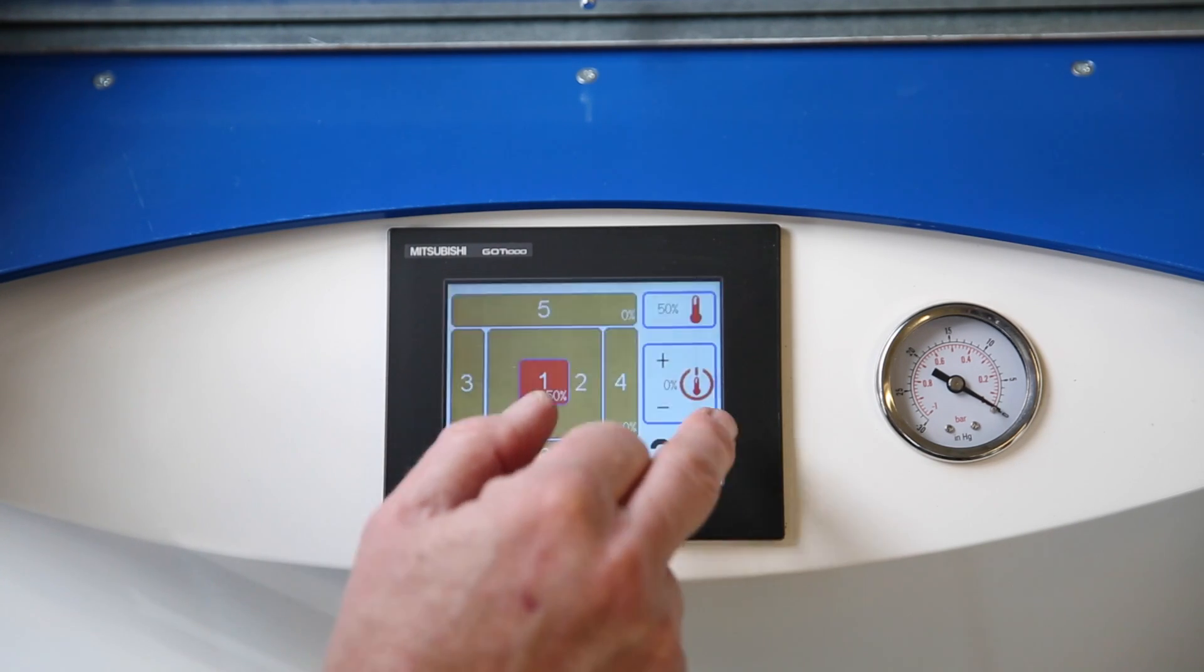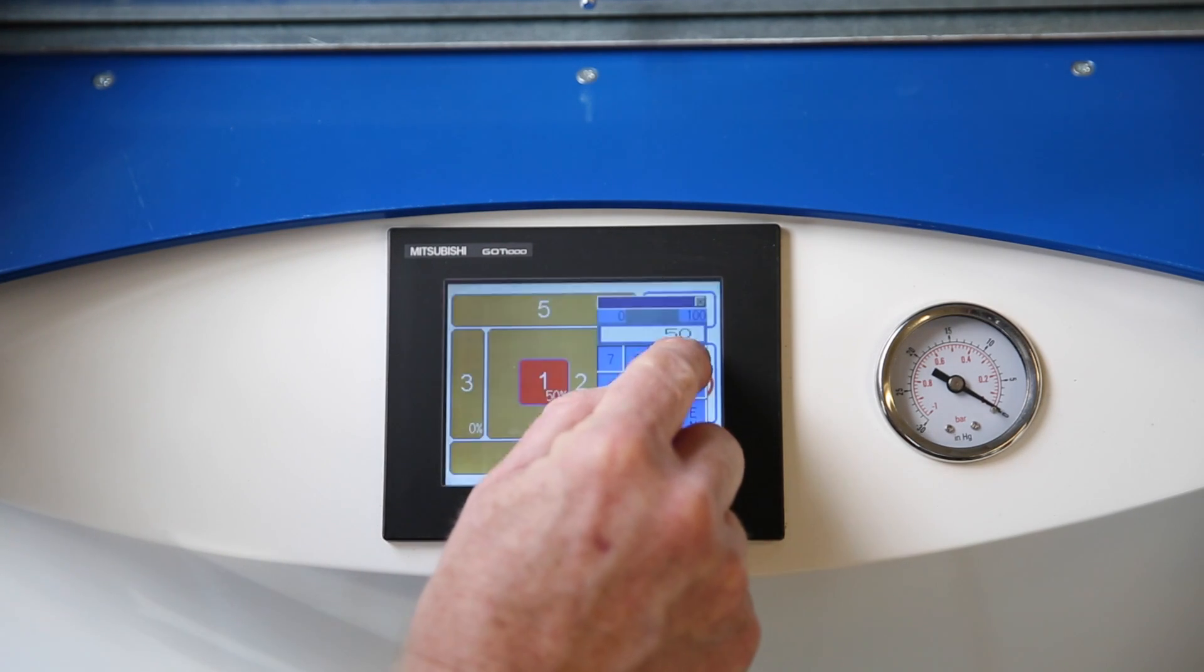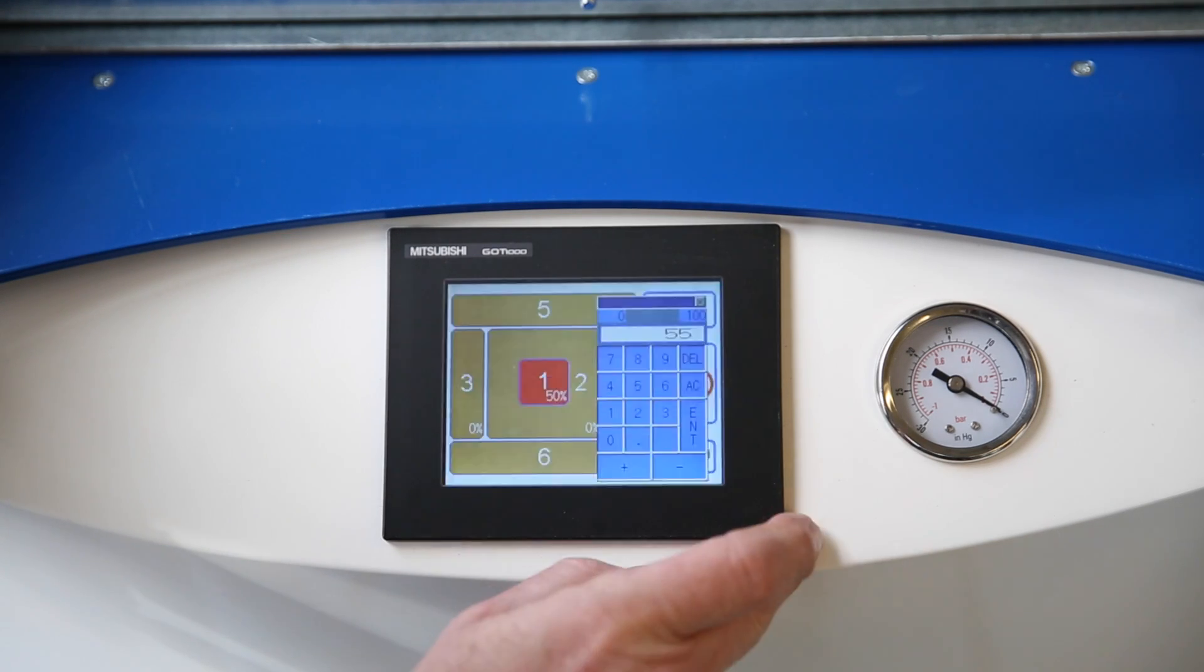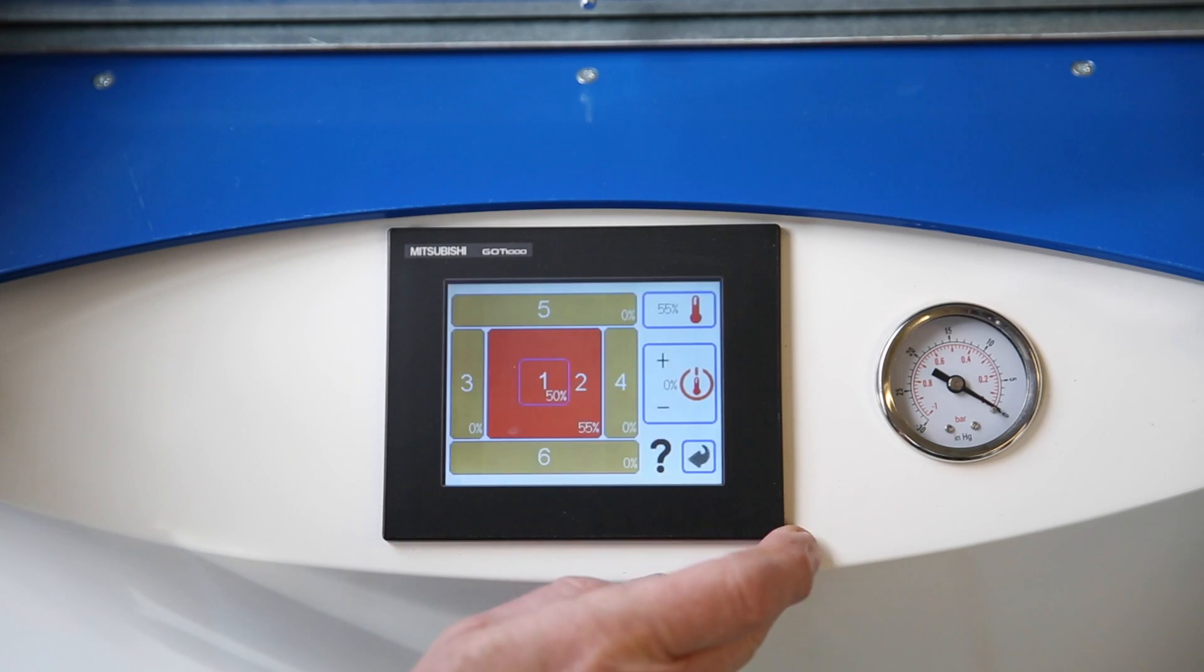And zone two I'm going to set to 55. To do that I'm going to go back to this zone, I'm going to clear, I'm going to delete that, I'm going to put in 55 percent, enter that, and I'll assign that to zone two, zone three.